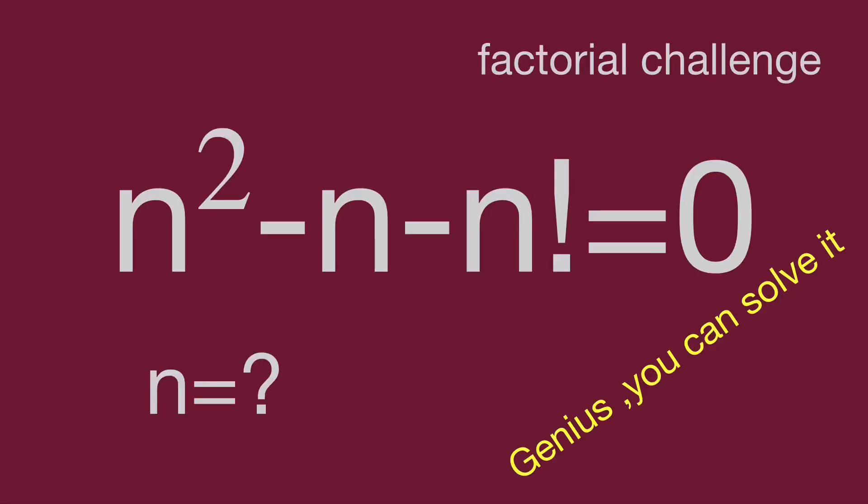Hello, you are watching Bauhippo Math Genius Reviews. We have an interesting factorial equation: n squared minus n minus n factorial equal to zero. Find n.